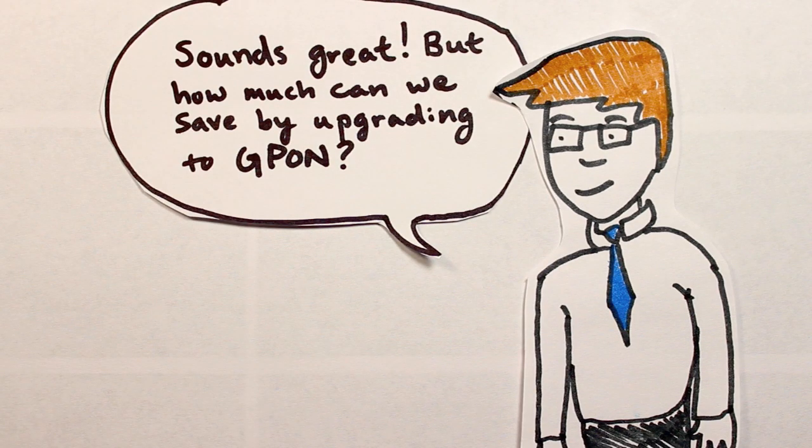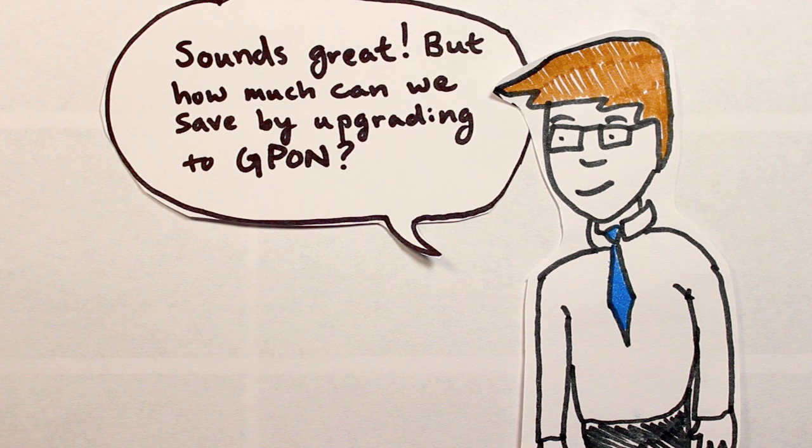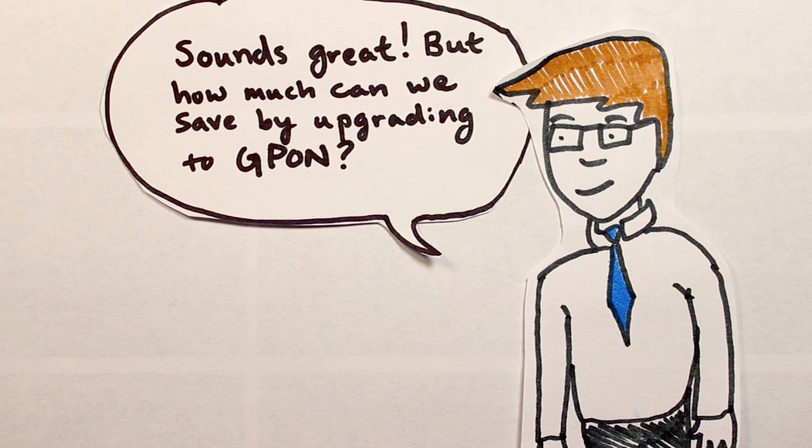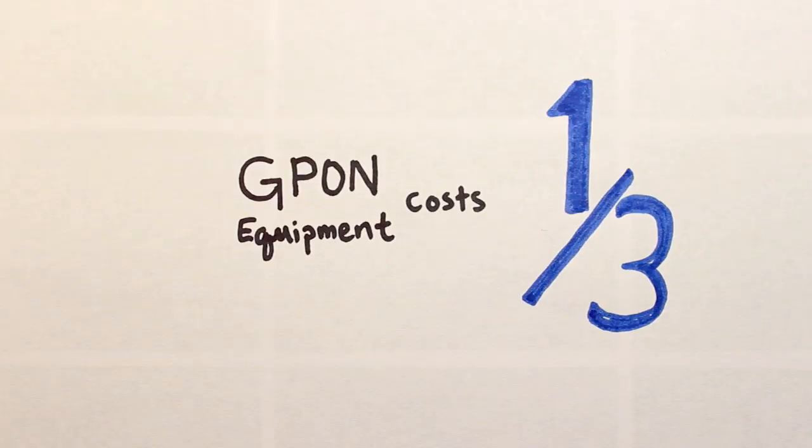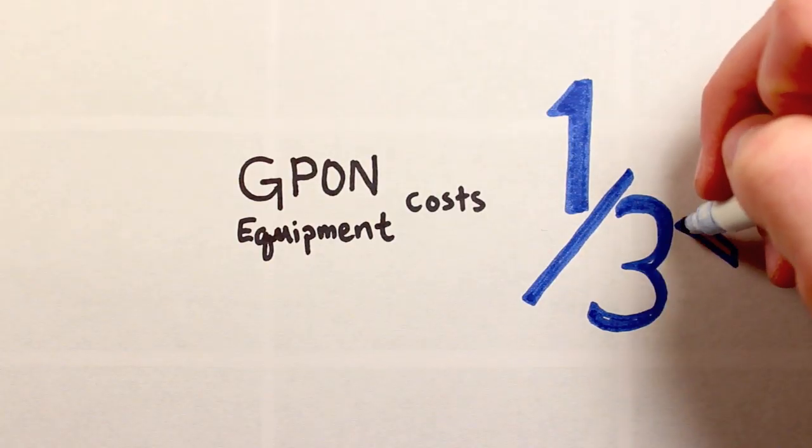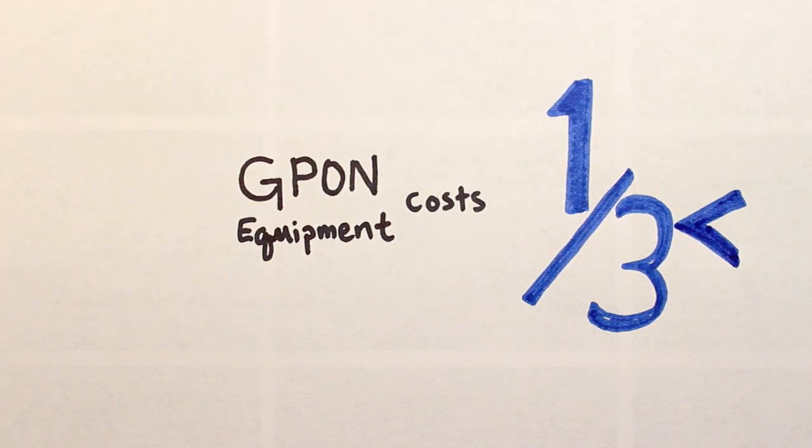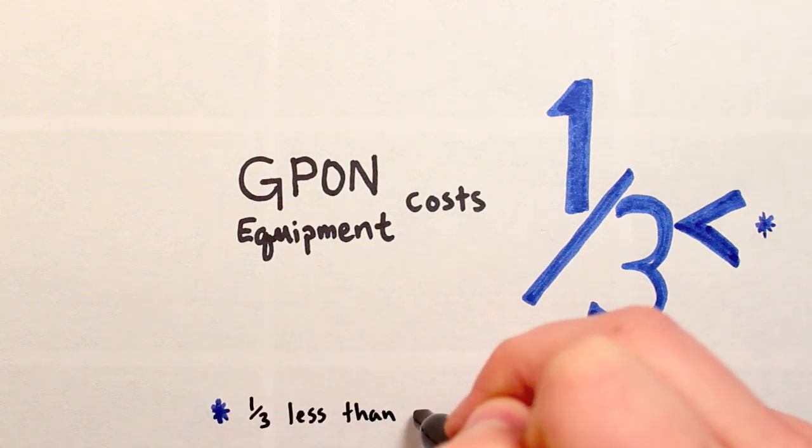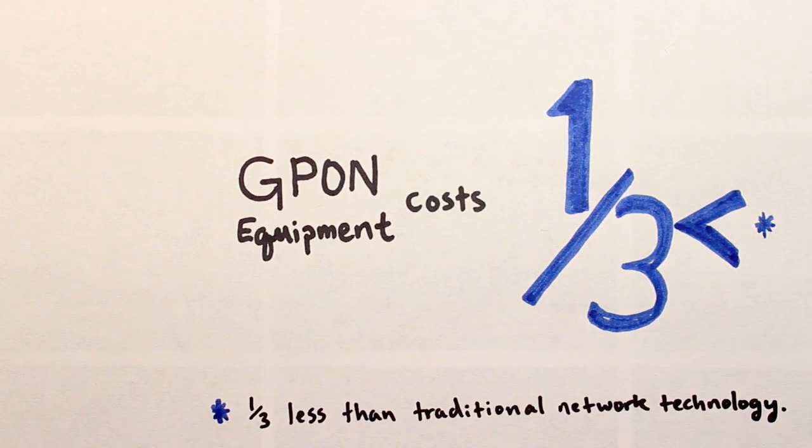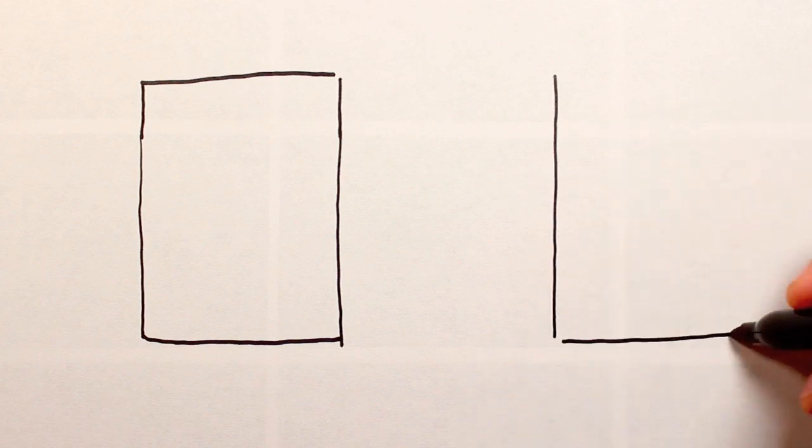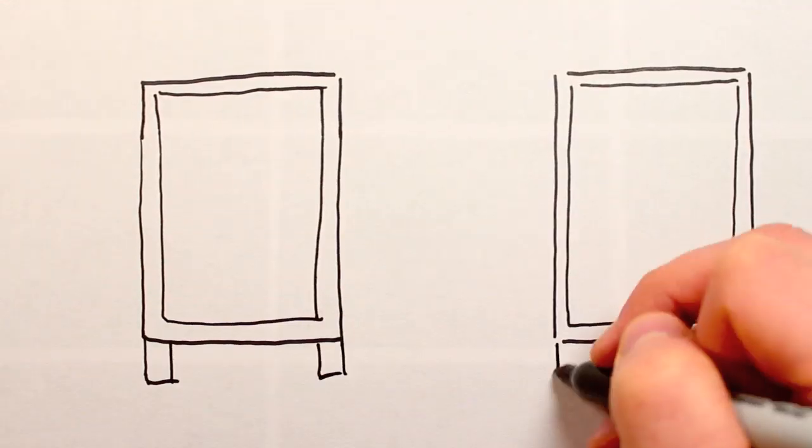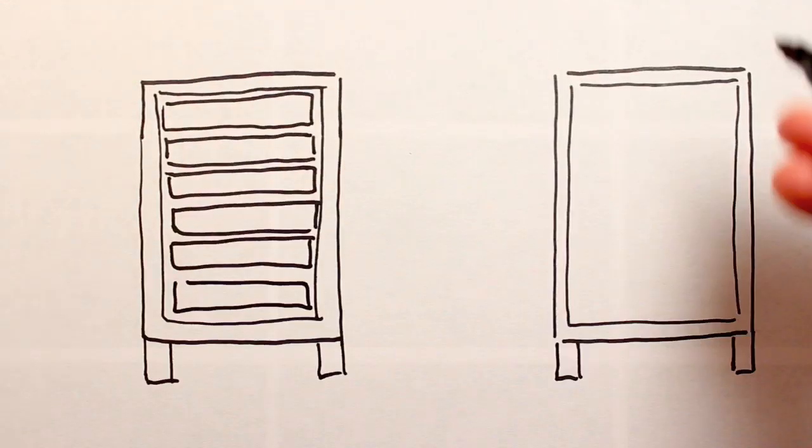We've already mentioned that GPON equipment and fiber-optics are now cheaper than traditional networking technologies or equipment, but exactly how much cheaper? GPON equipment costs one-third less to buy than traditional data networking equipment. It uses 40% to 60% less rack space and 40% to 60% less data center space, which can be very expensive.